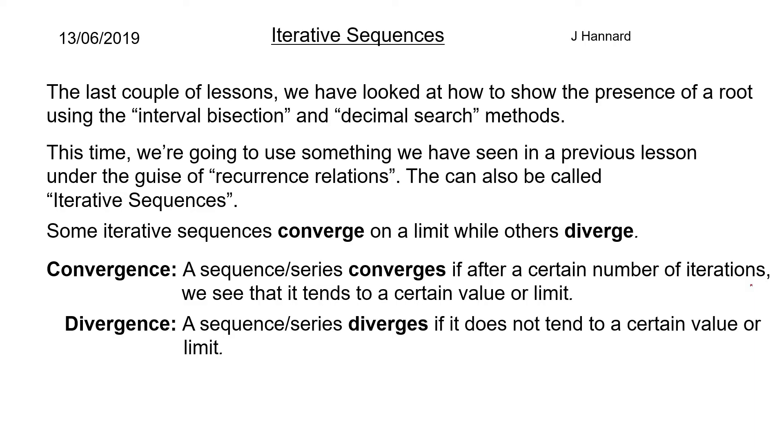Divergence is a sequence that doesn't tend to a certain value. So if you had a sequence that was xn+1 equals xn plus 2, you're just going to be adding 2 each time to your sequence. So it's never going to tend to a limit. It's just going to get bigger and bigger and move away from a limit if you like. I guess it tends to infinity, but you get what I mean.